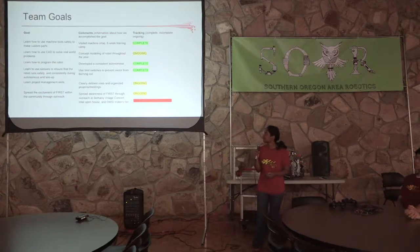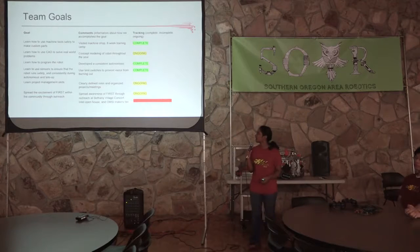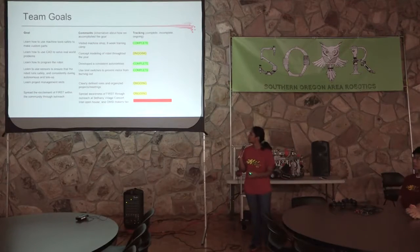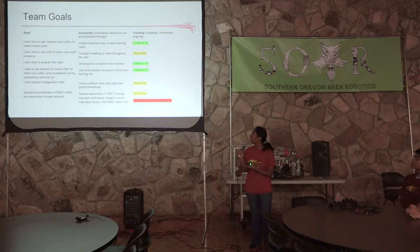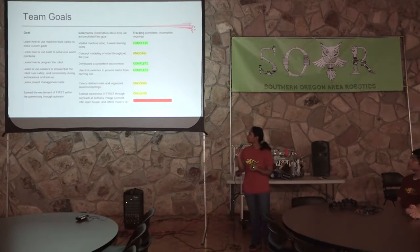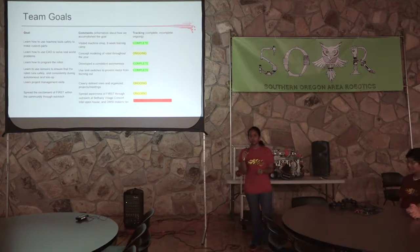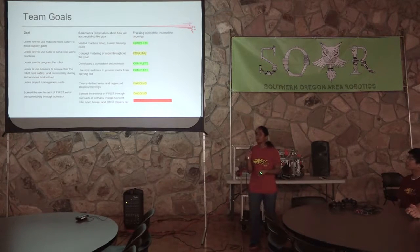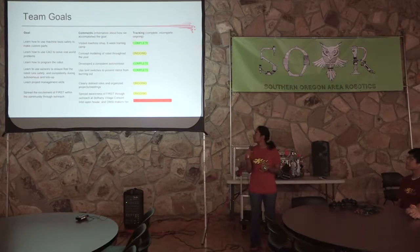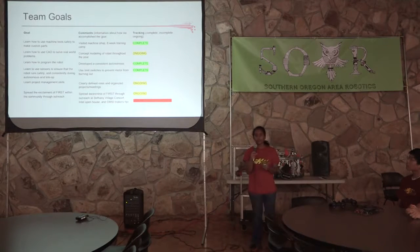This is an example of our team goals that we put in our engineering notebook. We've set some goals on the left side, like learning how to program and how to use CAD. In the middle, we have comments on how we've accomplished our goals. On the right side, we have tracking for whether the goal is complete, incomplete, or ongoing, and we've color-coded it so we can see throughout the year how we've progressed.